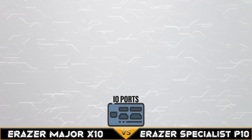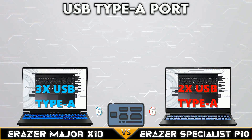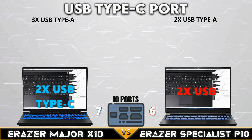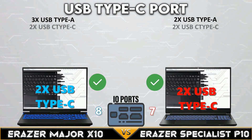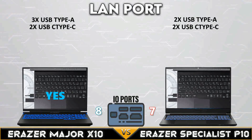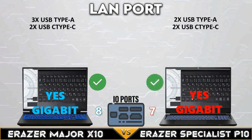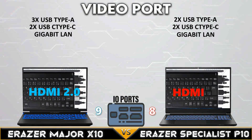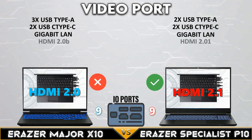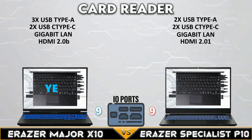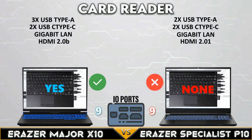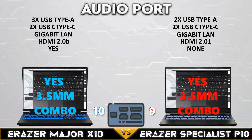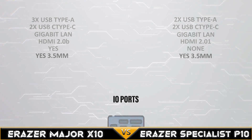Now let's go to IO ports. The Eraser Major X10 has 3x USB Type-A ports. Both laptops have the same USB Type-C ports and both support a Gigabit LAN port. The Eraser Specialist P10 supports an HDMI 2.1 port, the Major X10 supports a card reader, and both gaming laptops have a 3.5mm combo jack.